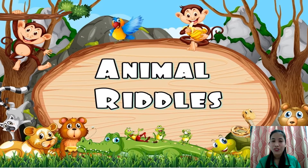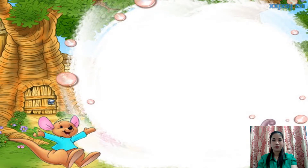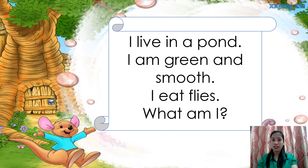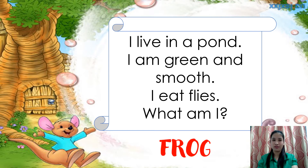To start our lesson, let's have these animal riddles. Are you ready? Let's have the first one. I live in a pond. I am green and smooth. I eat flies. What am I? That is a frog.